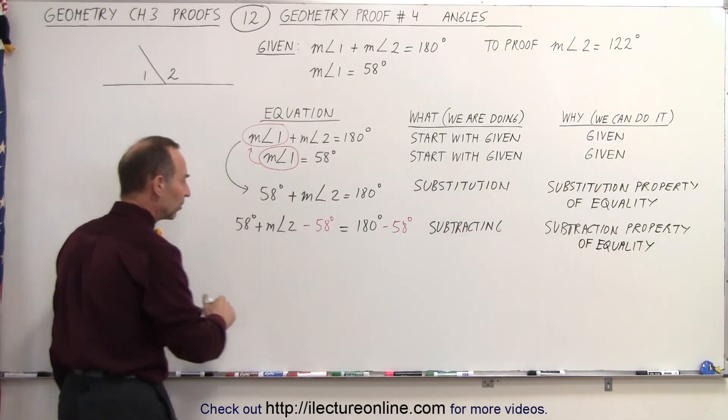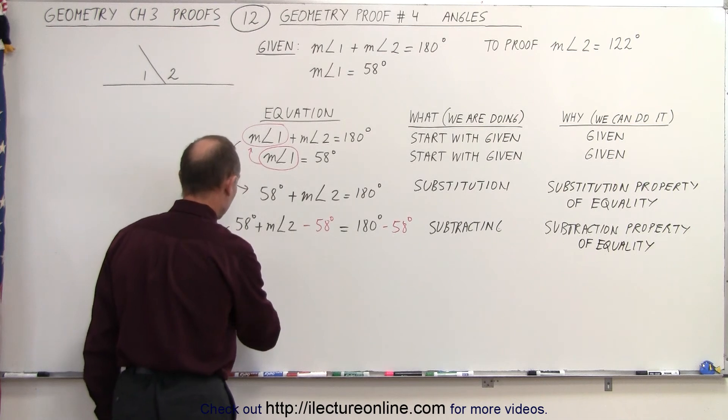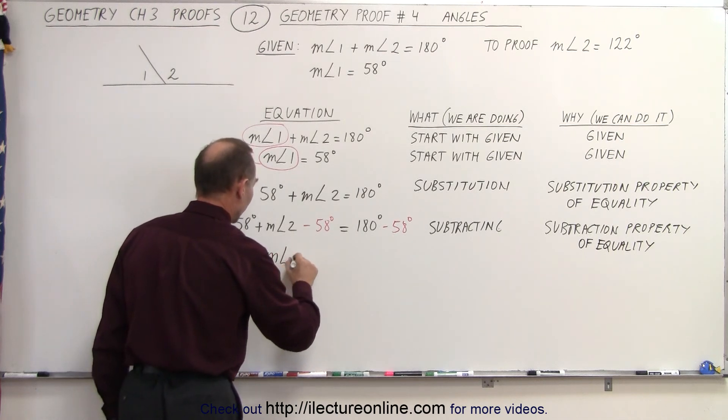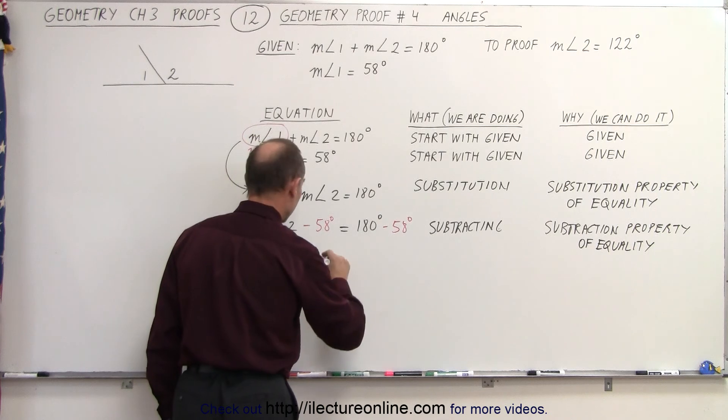And then of course, when we make the subtraction, that means that this equation turns into the measure of angle 2 is equal to 180 minus 58, which is 122 degrees.